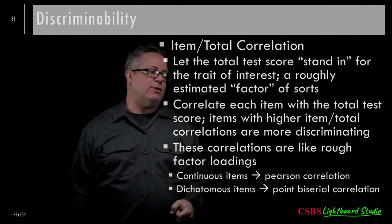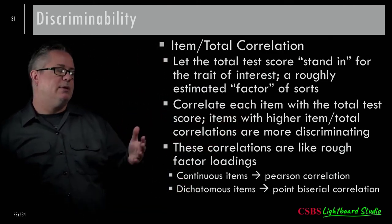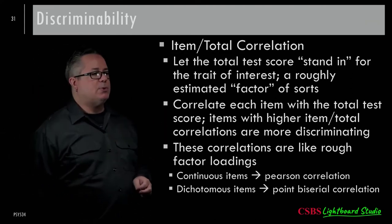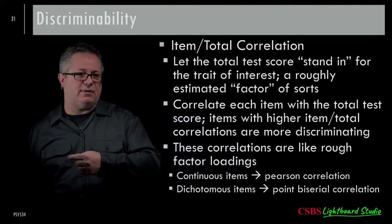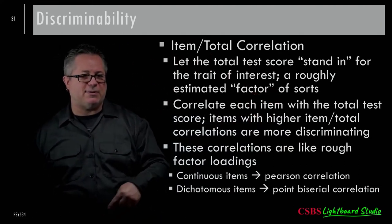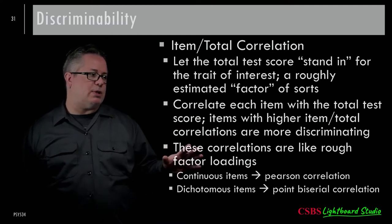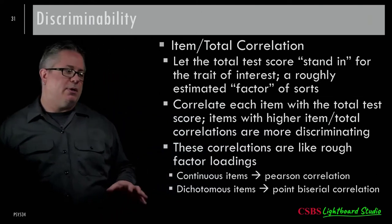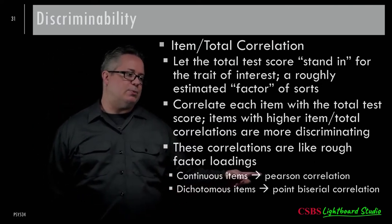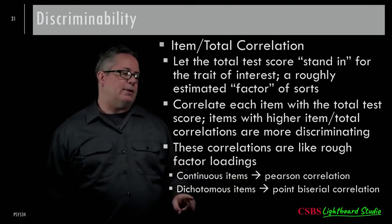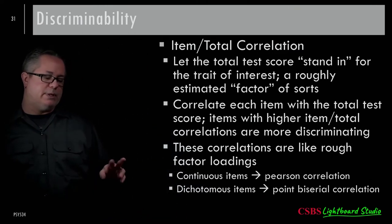The item-total correlation uses the total test score as a proxy for the trait — essentially a factor with all the error built in. Items with higher item-total correlations are more discriminating: if you're high on an item you're also high on the total. These correlations are like rough factor loadings. For continuous items like Likert scales, use Pearson correlations; for dichotomous items like yes/no, use point-biserial correlations.